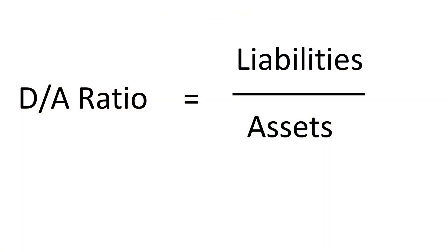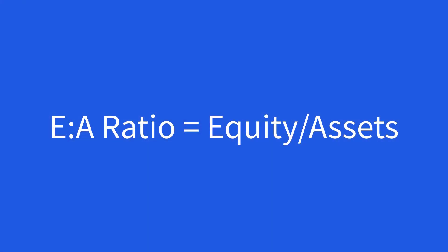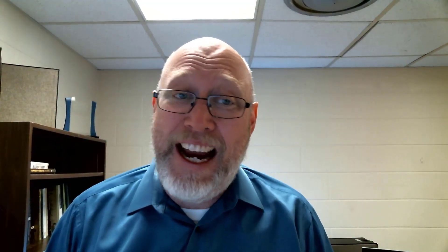They're all tied together. Again, that's because there are only three elements to our fundamental accounting identity, and all of these ratios show you two of the three. So with a little bit of math, you can back out the third.